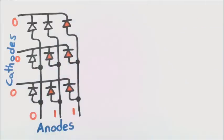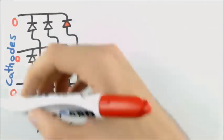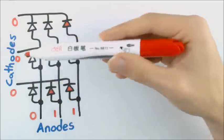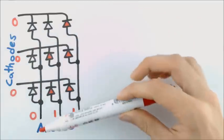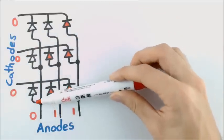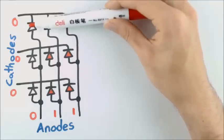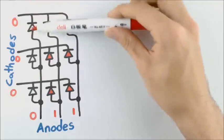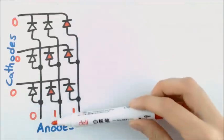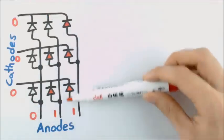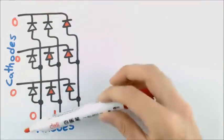What we will need to do is something called multiplexing. What multiplexing is about is turning on one of these columns at a time, and then when we're finished with it, turning that off, and then turning on the next column, and then the next column.